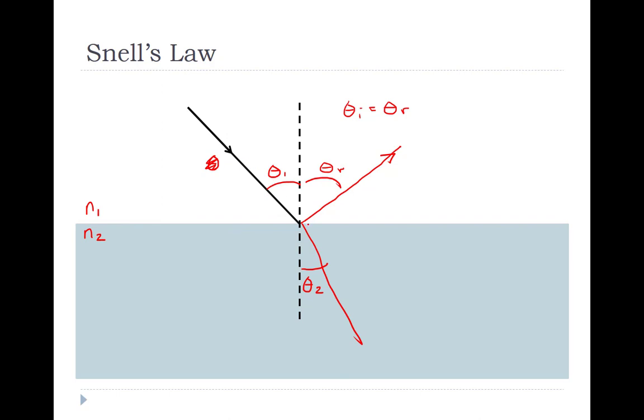We also see that I have bent towards the normal here. So we should expect N1 to be bigger than N2. I can relate N1, N2, theta 1, and theta 2 to each other using Snell's Law. So N1 sine theta 1 equals N2 sine theta 2.